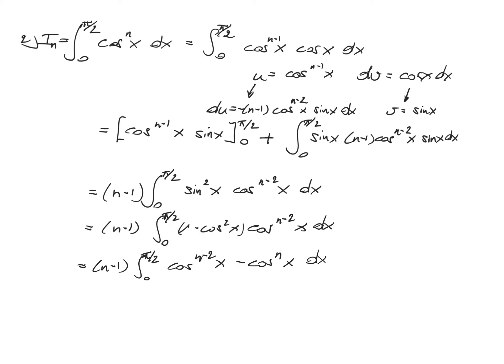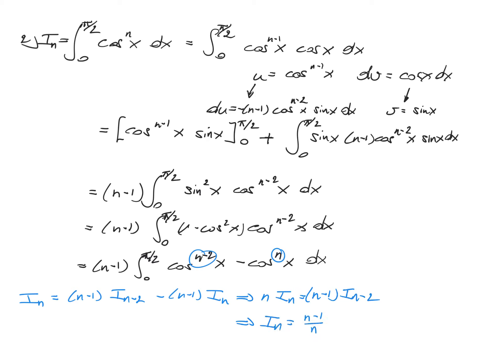We see that we again have integrals of cosine to certain powers. Writing the reduction formula: i_n equals n minus 1 times i_{n-2} minus n minus 1 times i_n. Rearranging gives n times i_n equals n minus 1 times i_{n-2}, or i_n equals (n minus 1) over n times i_{n-2}. This reduction formula skips a step — each integral depends on the one two steps before — so we need to calculate i_0 and i_1 separately.